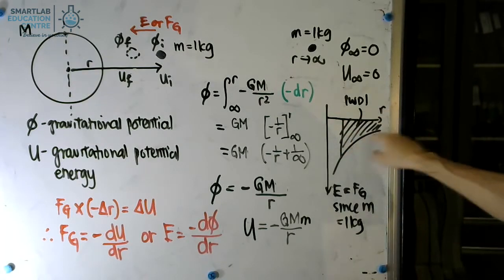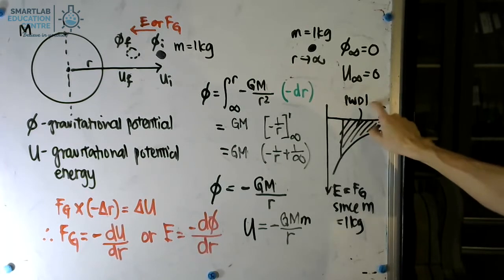Finally, to wrap it up, the area under the graph, the modulus of the area under the graph, is actually the work done.